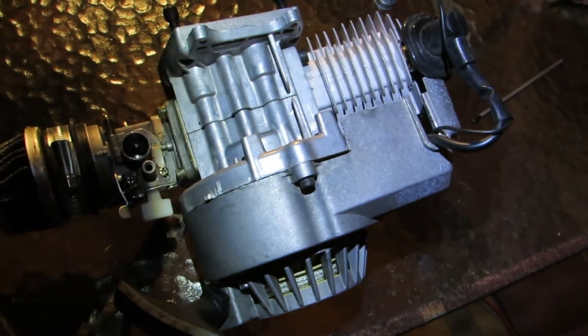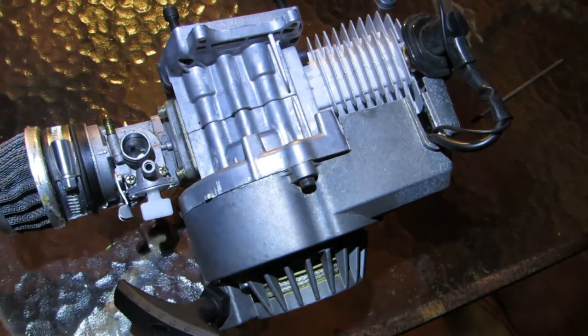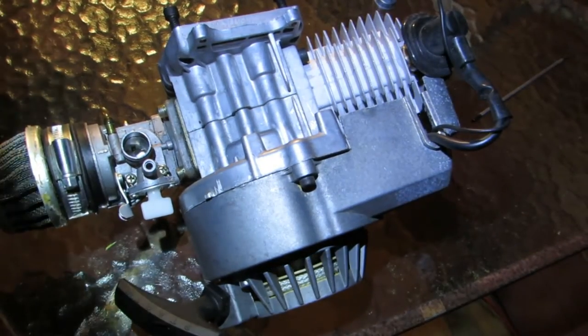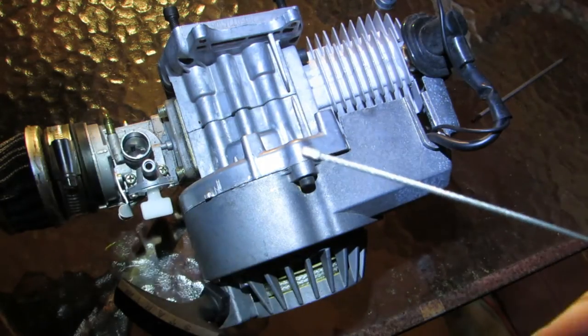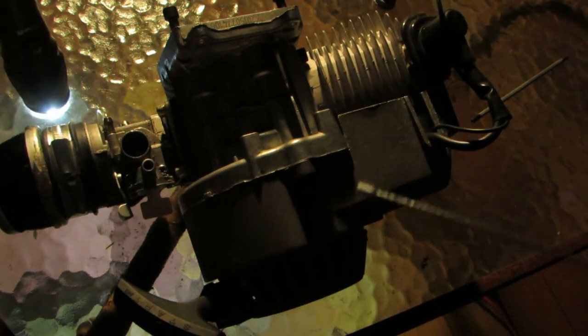Now set that aside and we're going to feed the throttle cable through the cap. You want to make sure that the cable that comes out of the sleeve is actually going to be long enough to go through this. Because it has to go quite a ways.